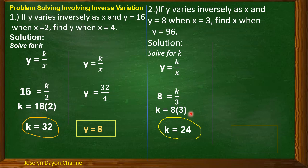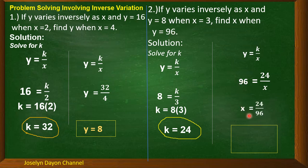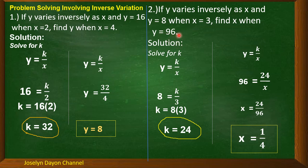Next, solve for x using the same equation y = k/x. Substitute k = 24 and y = 96: 96 = 24/x. So x = 24/96. Reduce to lowest terms: x = 1/4. Therefore, x = 1/4 when y = 96.